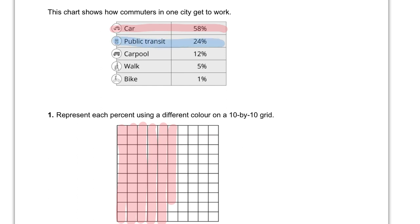Then we'll make public transit blue, and we've got 24 there. So here's 2, here's 12, 22, 24. Next we'll do carpools, which is 12. Here's 8, 9, 10, 11, 12. And then walking is 5%, 5 out of 100 is 5 of these squares. And finally, we have biking. We'll put that in gray, and just one of them.